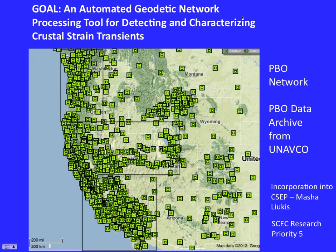We're working on a tool to monitor the plate boundary zone and detect crustal strain transients on timescales of days to weeks to months, and strain evolution over even years, and to determine what is statistically significant. We're using the continuous GPS network within what is known as PBO, and our goal is to ultimately get this detection tool established with CSAP.